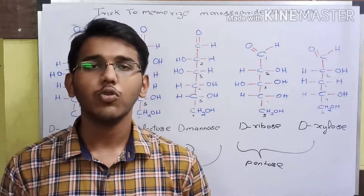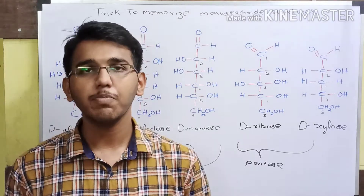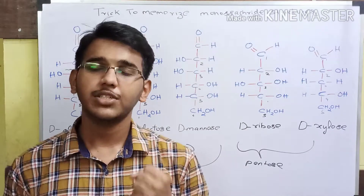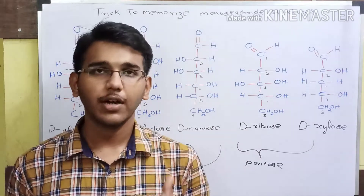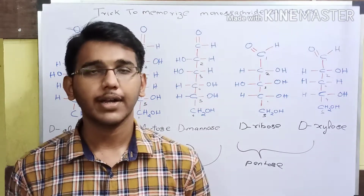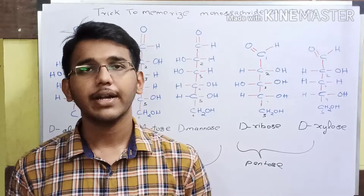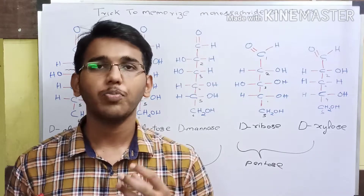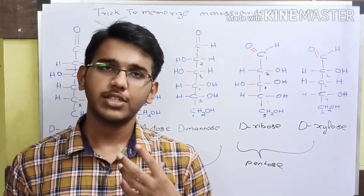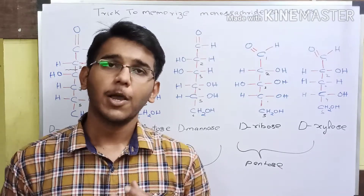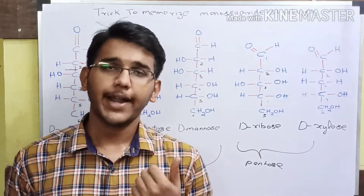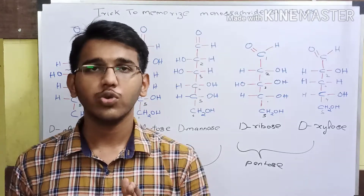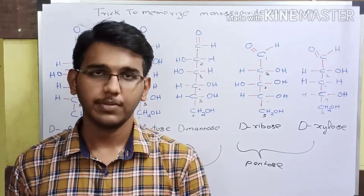What is a monosaccharide? A monosaccharide is the simplest form of carbohydrate which cannot be further hydrolyzed. A carbohydrate is a molecule or group of molecules which contains carbon, hydrogen, and oxygen in the ratio of 1 to 2 to 1.